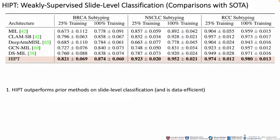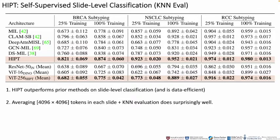We first compare HIPT against comparable MIL architectures on cancer subtyping tasks in the TCGA, and note that HIPT outperforms all prior methods across varying percentage folds of training data. Furthermore, we explore self-supervised performance of HIPT, taking the mean 4K feature as the slide-level feature representation. We report that on RCC subtyping, self-supervised HIPT features outperform methods such as CLAM and DSMIL which use slide labels.